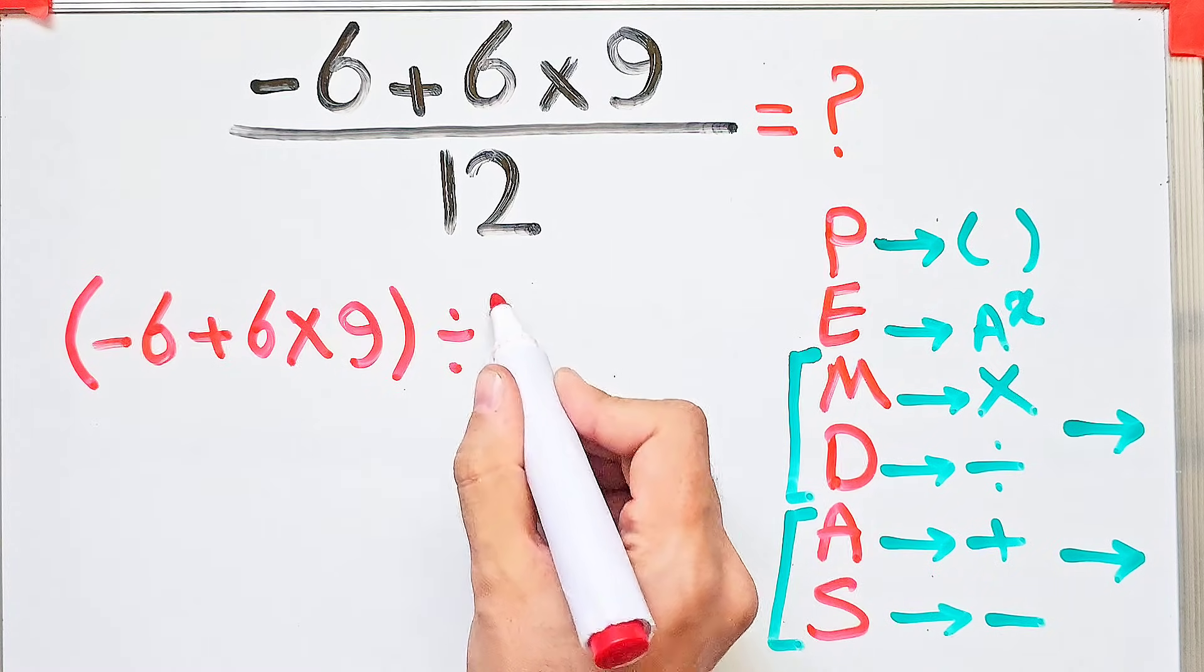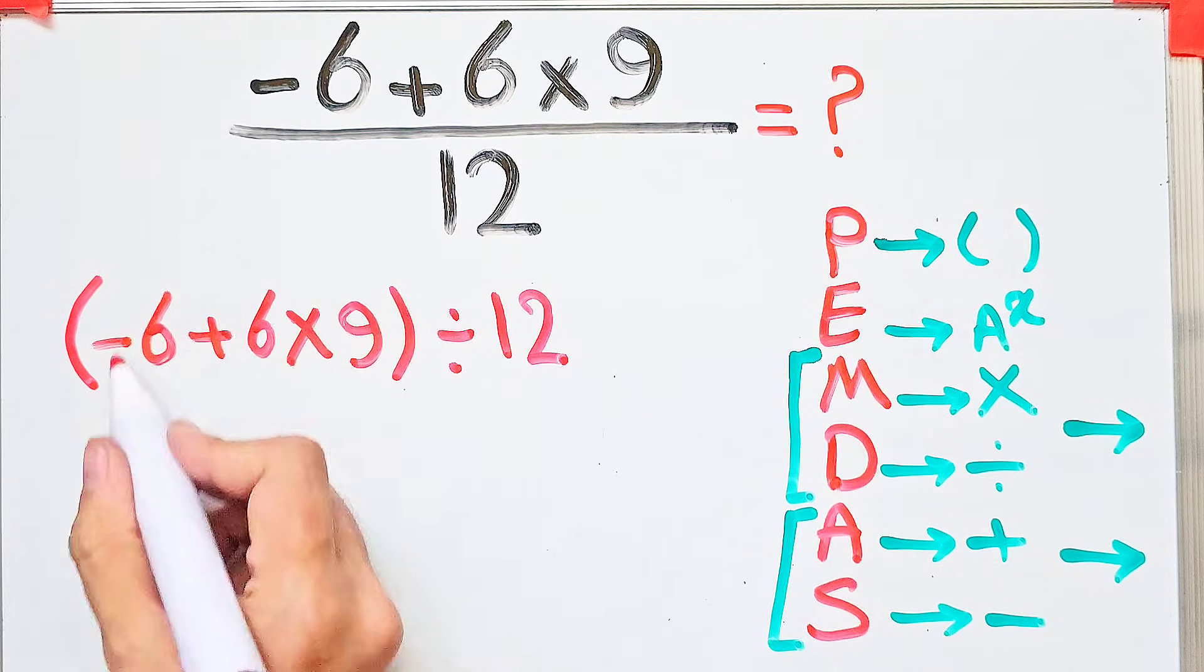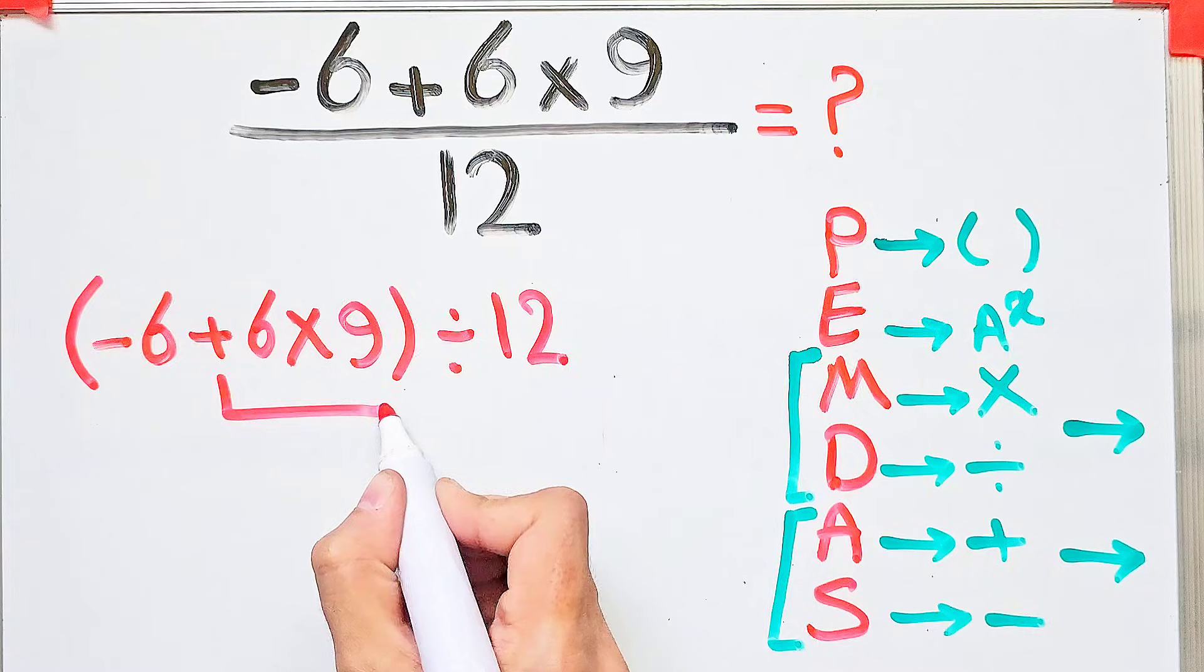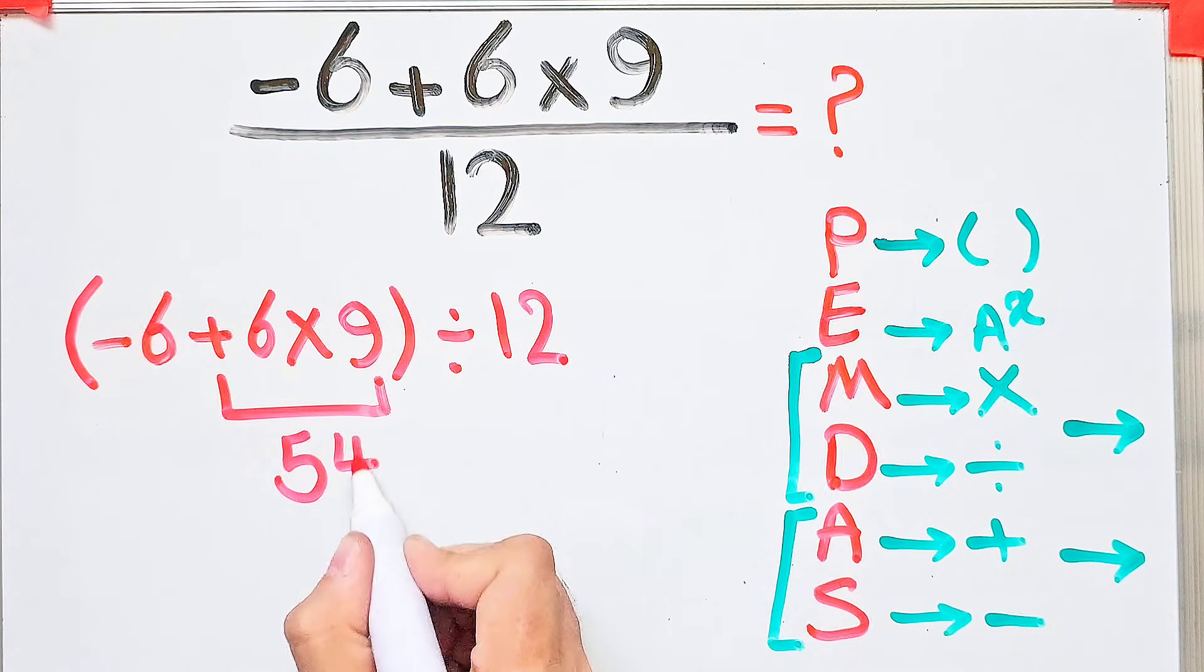As you can see on the board, we simplify the question as I told you. First, we do multiplication: six times nine equals 54.